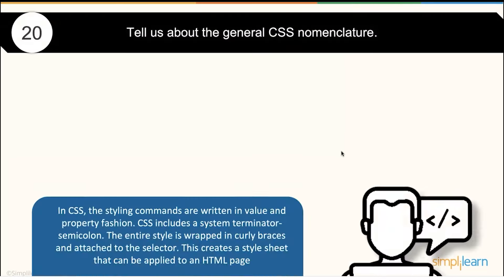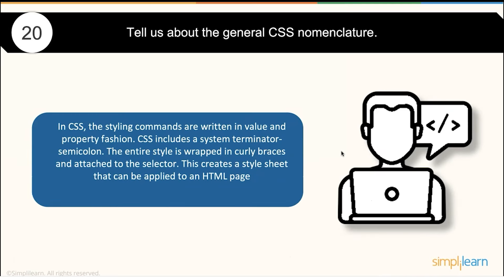What is CSS nomenclature? CSS nomenclature means styling commands are written in a property-value fashion. CSS includes a system terminator — semicolons — and the entire style is wrapped in curly braces, attached to a dedicated selector. This creates a style sheet that can be applied to an HTML page. That is the standard CSS nomenclature.